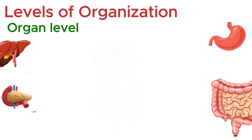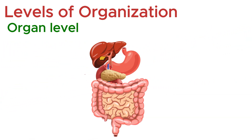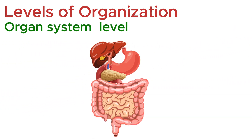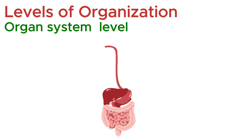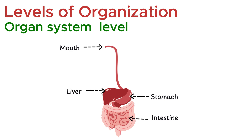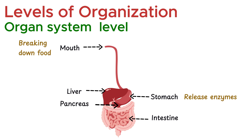When organs combine and work together for a common purpose, they form an organ system — a team of organs, each with its own role, but all contributing to one major body function. For example, the digestive system includes the mouth, stomach, intestines, liver, and pancreas. Each organ has a specialized task, from breaking down food, to releasing digestive enzymes, to absorbing nutrients into the bloodstream.